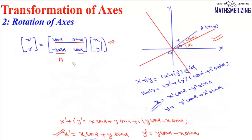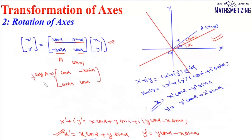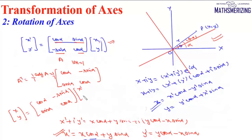To find X and Y in terms of X dash and Y dash, we find the inverse of this matrix A. The determinant of A is 1. The adjoint is obtained by interchanging the diagonal elements and negating the off-diagonal ones, giving [cos alpha, minus sin alpha; sin alpha, cos alpha]. Dividing by determinant 1 gives A inverse. So [X; Y] equals [cos alpha, minus sin alpha; sin alpha, cos alpha] times [X dash; Y dash], giving X equals X dash cos alpha minus Y dash sin alpha, and Y equals X dash sin alpha plus Y dash cos alpha.